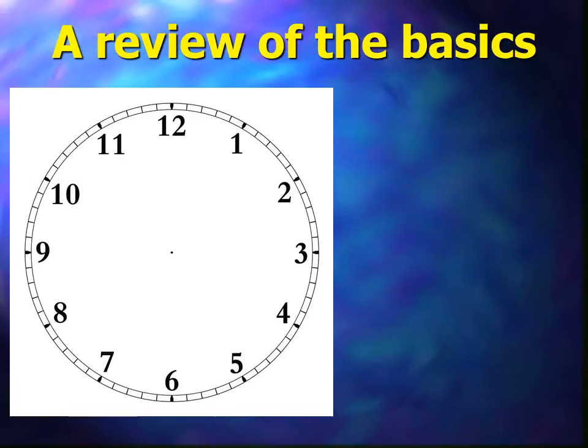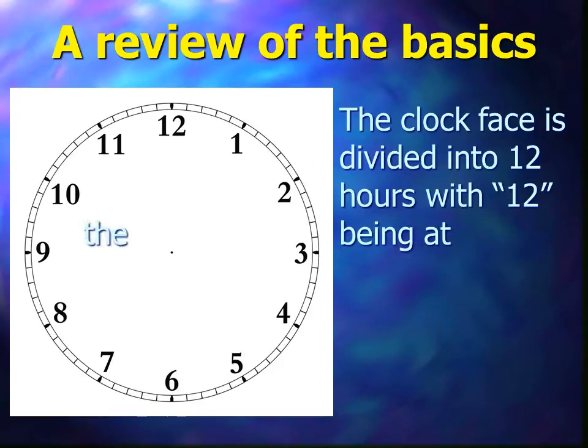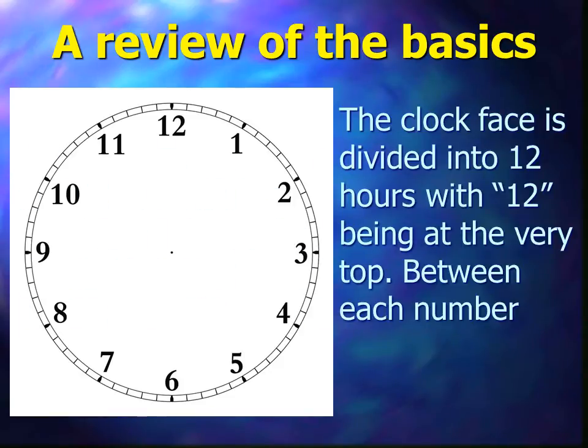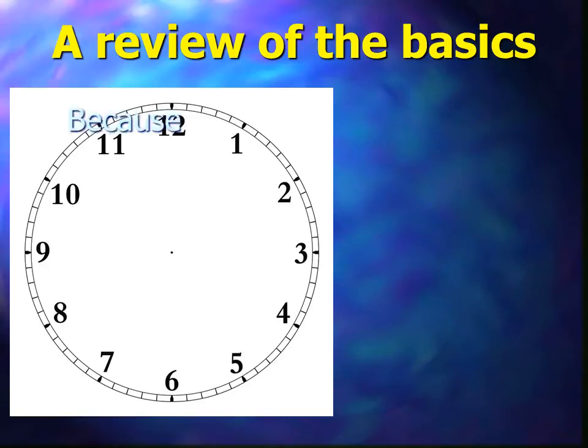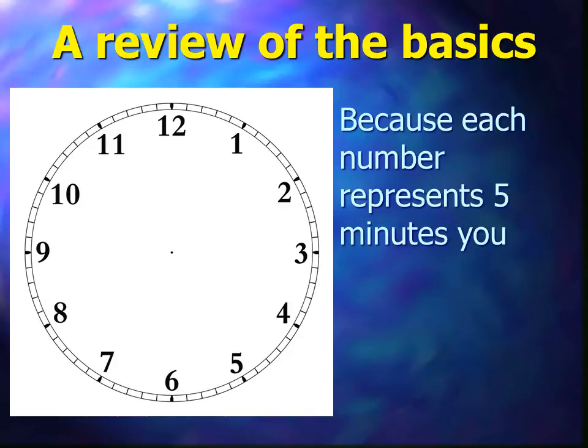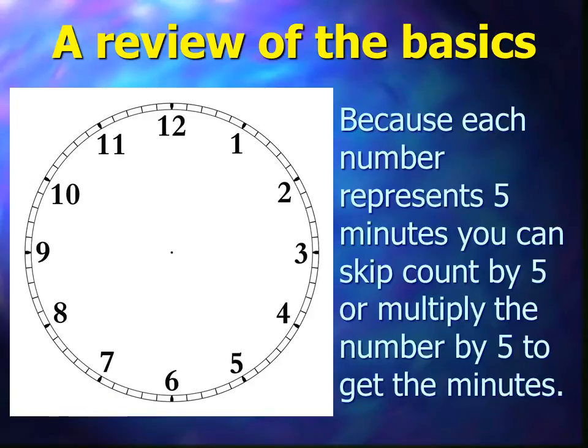Here is an analog clock without the hands on it. The clock face is divided into 12 hours, with 12 being at the very top of the clock. Between each number are 5 divisions for minutes. Because each number represents 5 minutes, you can skip count by 5, or multiply the number shown on the clock by 5 to get the minutes.